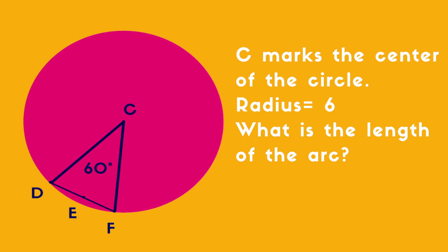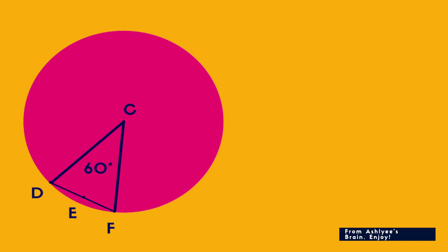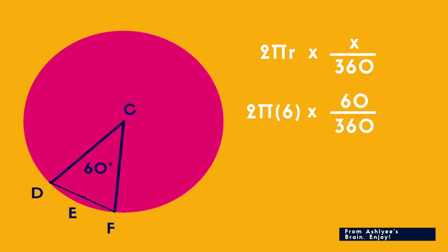So let's practice. C marks the center of the circle and the radius is 6. What is the length of the arc marked by D and F? We already know the radius and we know the interior angle. So all we need to do is pull out the circumference formula, 2πr, and multiply it by 60 — the interior angle — over 360 degrees. Some things cancel out and we're left with 2π.